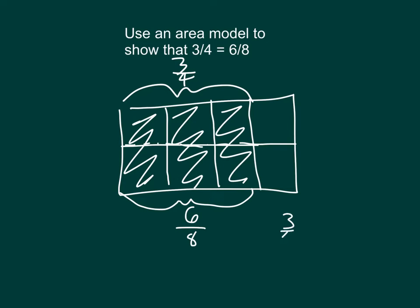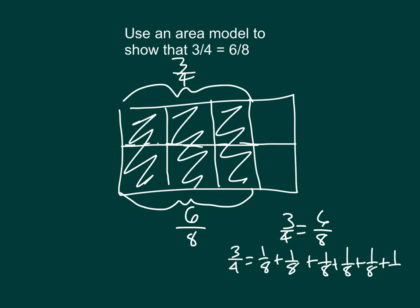So that 3 fourths does equal 6 eighths. We could write this also as 3 fourths equaling 1 eighth plus 1 eighth plus 1 eighth plus 1 eighth plus 1 eighth plus 1 eighth. Or, that it equals 6 times 1 eighth. We also could have decomposed it as 2 times 1 eighth plus 2 times 1 eighth plus 2 times 1 eighth.